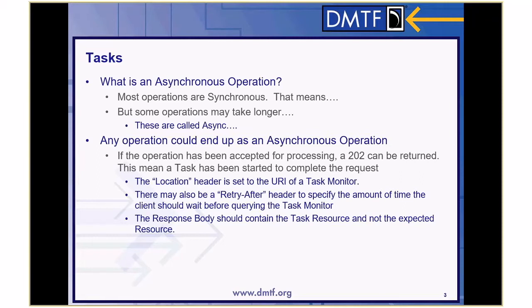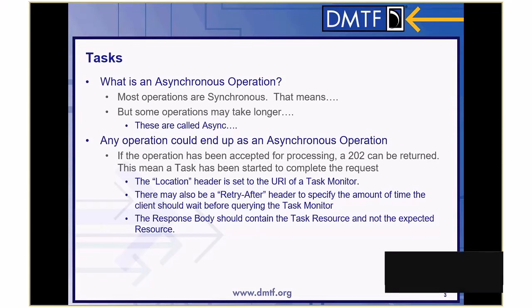The response body that you get back when you get a 202 is not like, say, a GET of a computer system — it's not going to be the computer system resource. It's going to be a task resource. So you need to have a fork in your code that says: if HTTP operation is 202, don't go down the normal path, call this subroutine and then come back. That subroutine is going to monitor the task resource, check it out, maybe use it for getting and deleting, then do a GET on the task monitor when everything's done and use that as the response body to complete the rest of your code.